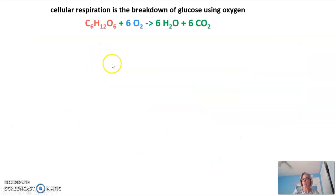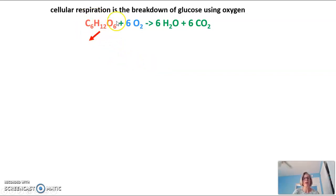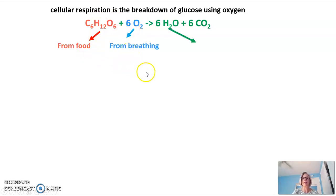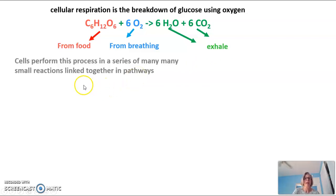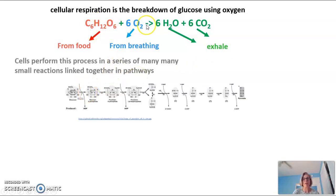Cellular respiration is the process of breaking down glucose using oxygen. The balanced equation for respiration is shown here, and you should know this equation. Glucose, which we get from food, reacts with oxygen — which we breathe in — and the two products are water and carbon dioxide, which are exhaled in our breathing process. Cells perform this breakdown in a series of many small reactions linked together in something called a pathway.